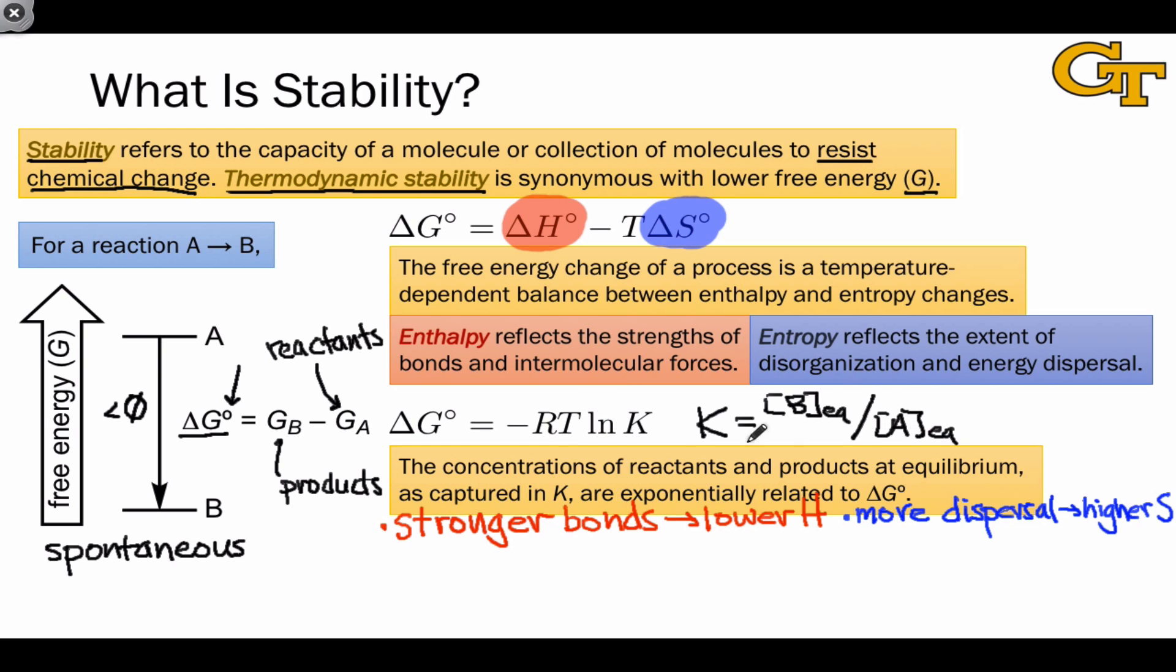When delta G changes by one unit, K changes by a power of 10, approximately, with this negative RT factor scaling that change. This exponential relationship means that very small changes in delta G can lead to large effects on the equilibrium constant and large changes in the amount of reactant or product we expect.